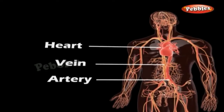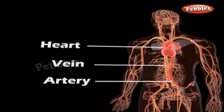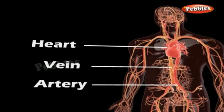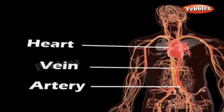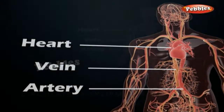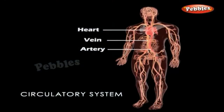Hemoglobin binds with oxygen and transports it to all parts of the body and ultimately all the cells. It will be difficult to provide oxygen efficiently to all the cells of the body without hemoglobin. The presence of hemoglobin makes blood appear red. The blood also has white blood cells, WBC, which fight against germs that may enter our body.